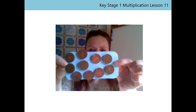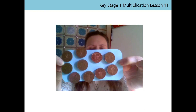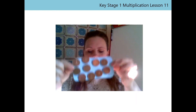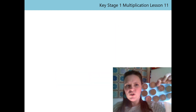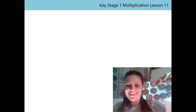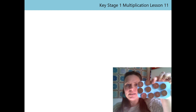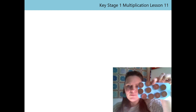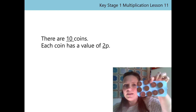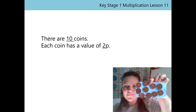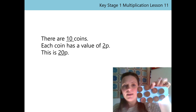So what is the value of this set altogether? I'd like you to pause the video now and count them in twos. Great counting in twos. Did you get 20 just like I did? Purse B is 20p. Let's put all the information we have into our stem sentences. Can you say them after me? There are 10 coins. Each coin has a value of 2p. This is 20p. Brilliant! We know the value of the coins in Purse B is 20p.